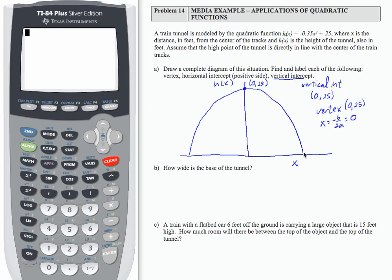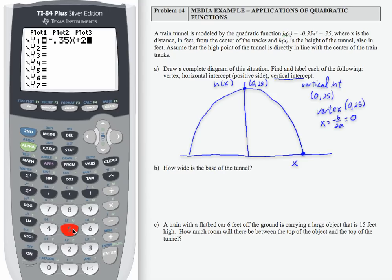Now to find the horizontal intercept, which is this point right here, I'm going to have to use my calculator. So let's go to Y equals and enter the function negative 0.35 X plus 25. So that's going to be my quadratic function.